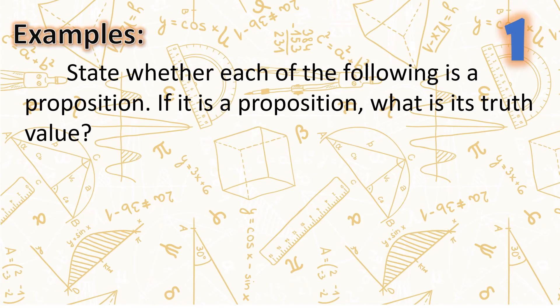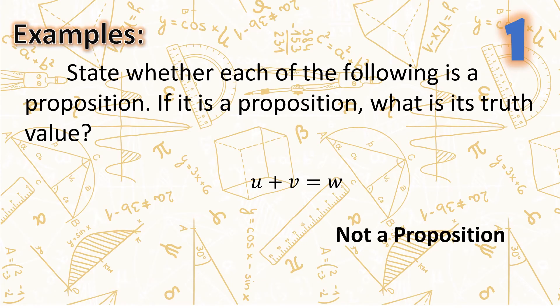State whether each of the following is a proposition, and if it is a proposition, what is its truth value? Number one: 'u plus v equals w.' This is not a proposition. Just like 'x plus four equals seven' from the previous slide — the values of u, v, and w are not assigned. Therefore, this is neither true nor false, hence not a proposition.